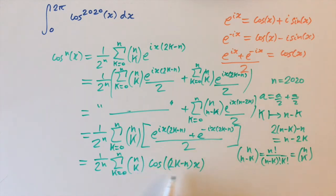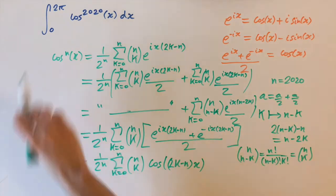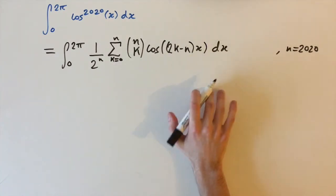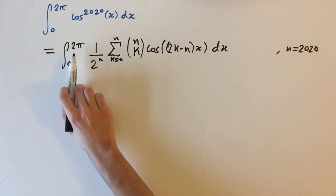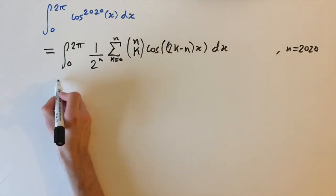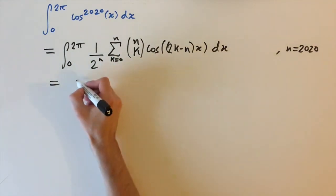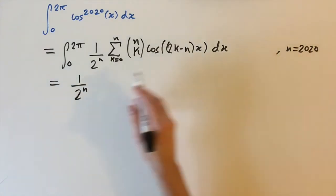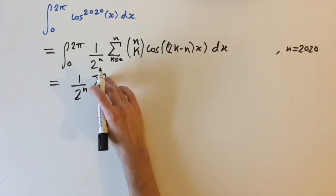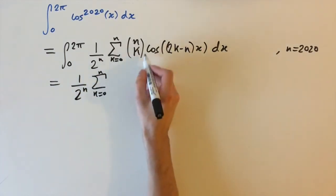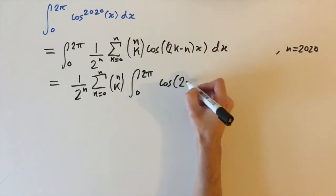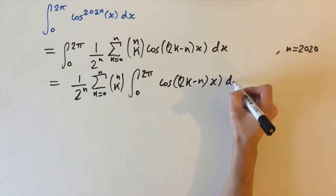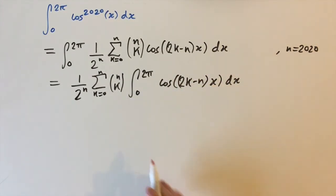We've replaced cosine to the power of 2020 with a sum of other cosines. Since integration is linear, we can interchange the sum and the integral. Constants don't depend on x so we bring out one over two to the power of n, the sum from k equals zero up to n, the coefficients n choose k, and then multiply by the integral between 0 and 2π of cosine of (2k minus n) times x dx.